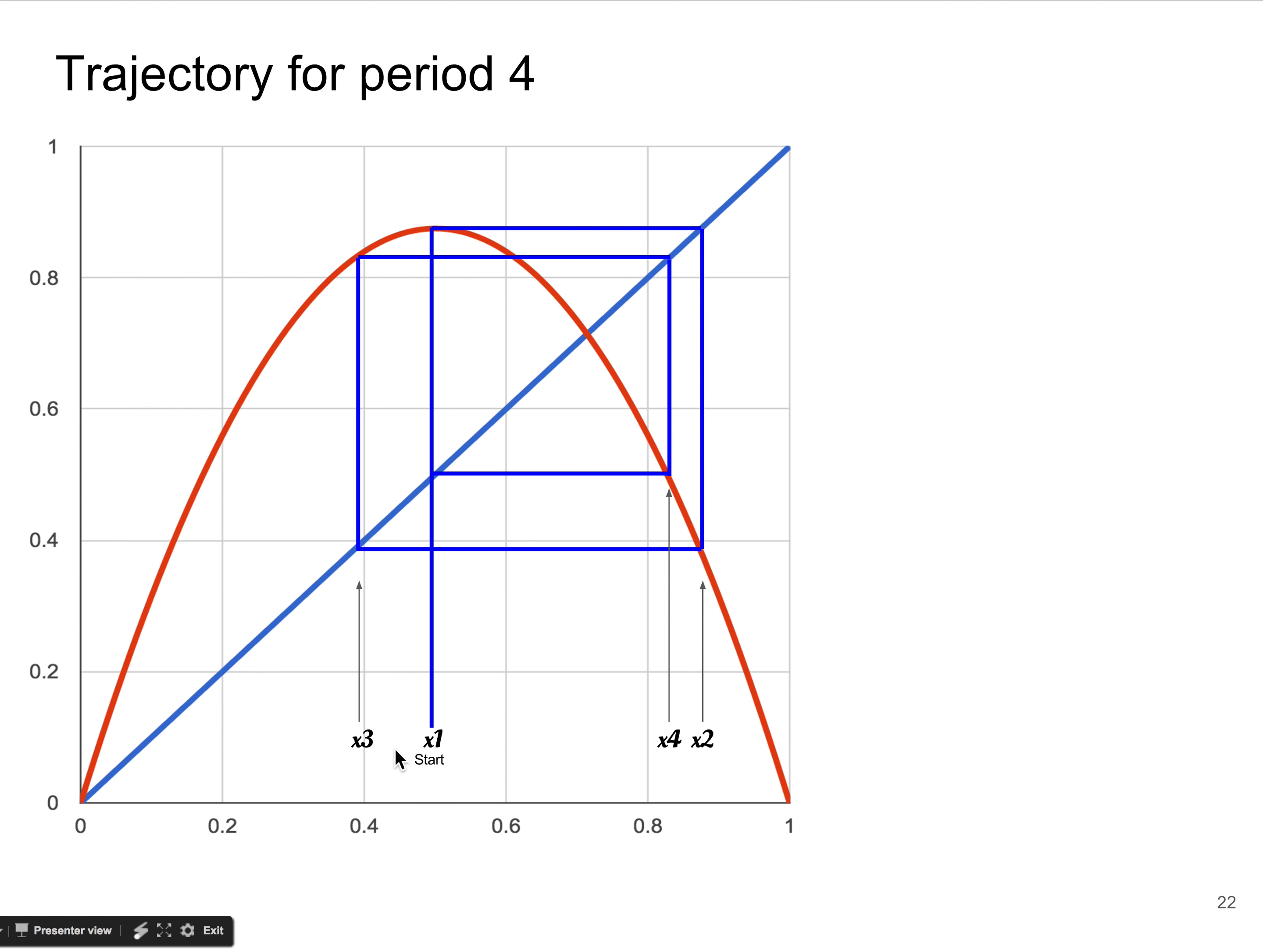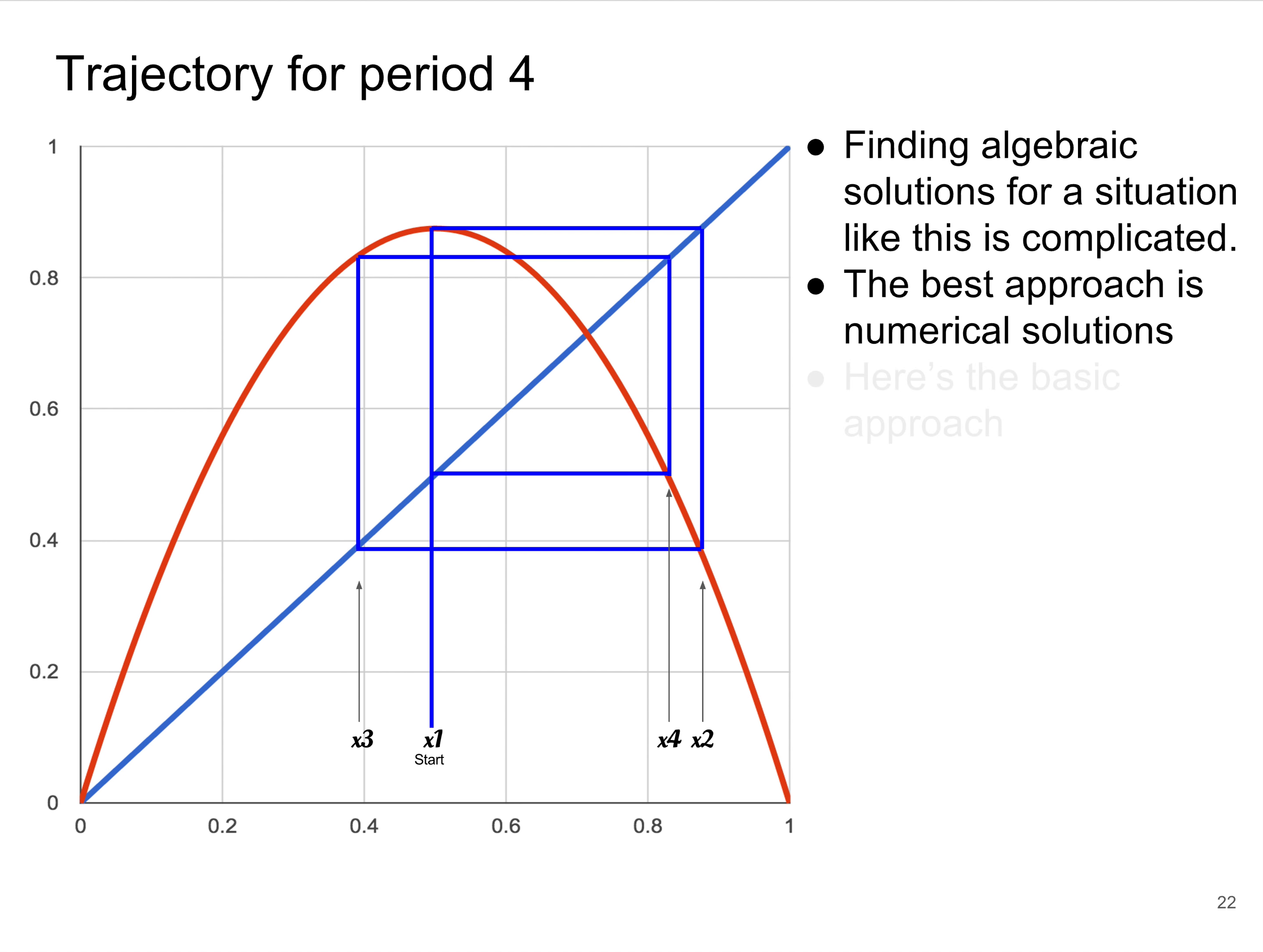So here's the trajectory for period four. Now we have an r value that takes us higher. We start here, we go up, over, down, over, up, over, down, over. And now you can see we're going to repeat because the next value is right back where we started at the first x value. Complicated, higher order solutions, so numerical methods are necessary. So let's go through it again.